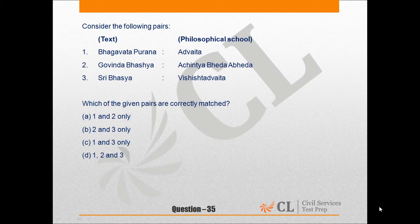Question No. 35. Consider the following pairs of text and the philosophical school associated with it. 1. Bhagwat Purana, the philosophical school Advaita. 2. Govinda Bhashya, the philosophical school Achintya Bhed Abheda.